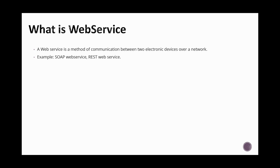For example, if you have a service which you want to host on the web or internet, that is called a web service. It helps communicate between two electronic devices — it could be a laptop, desktop, or mobile app. If my computer wants to talk to another service available on the internet, they can use this communication method, where I can host my service on a server and access it from my desktop.